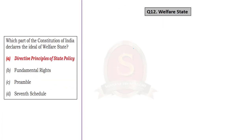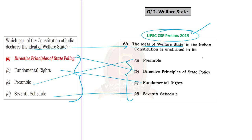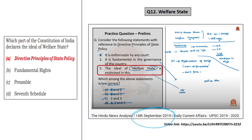The next question is also a polity question — it is a repeated previous year prelims question on the ideal of welfare state. UPSC asked the same question in the Civil Services Prelims 2015 examination, and in 2020 they simply shuffled the options. We discussed about this ideal of welfare state on 14th September 2019 in the Hindu News Analysis, in the practice questions discussion session — why the ideal of welfare state is enshrined in directive principles of state policy. The article which deals with this is Article 38, which comes under DPSP, dealing with the state securing a social order for the promotion of welfare of the people. So we can easily arrive at the correct answer, Option A — directive principles of state policy.